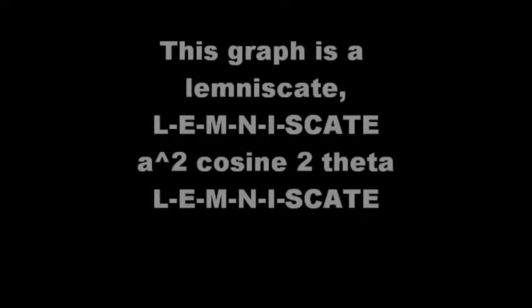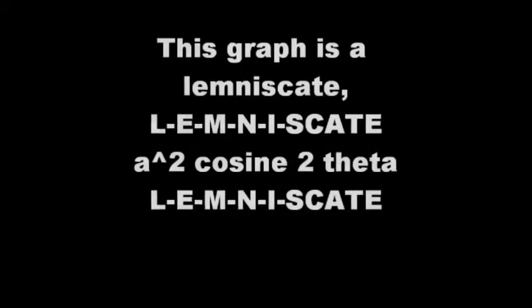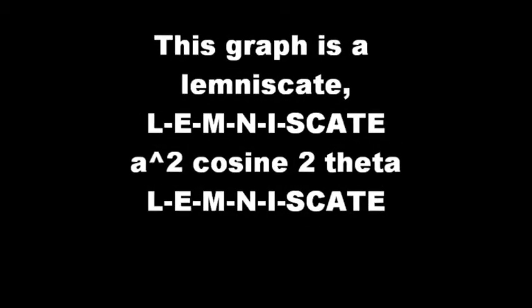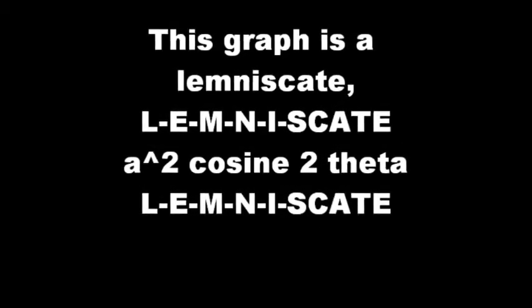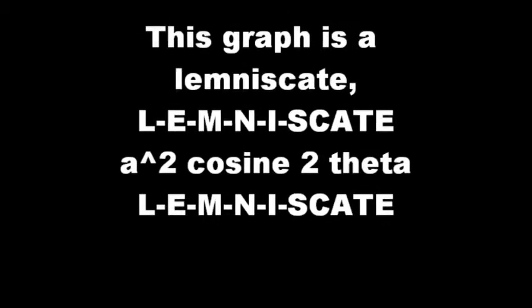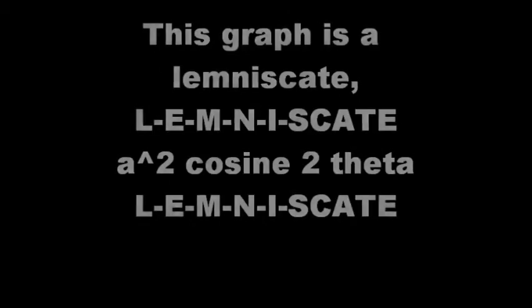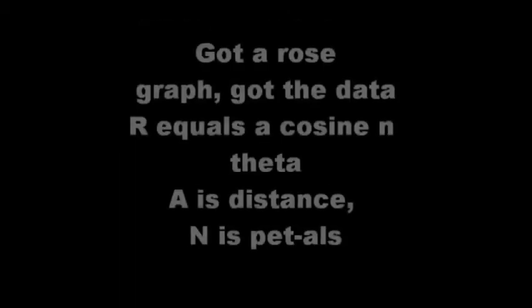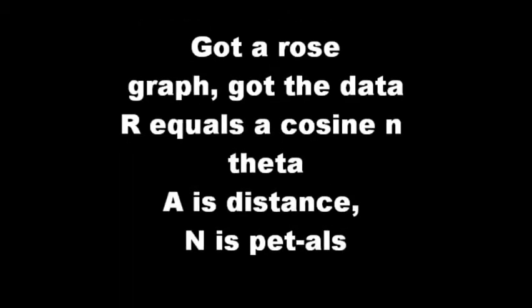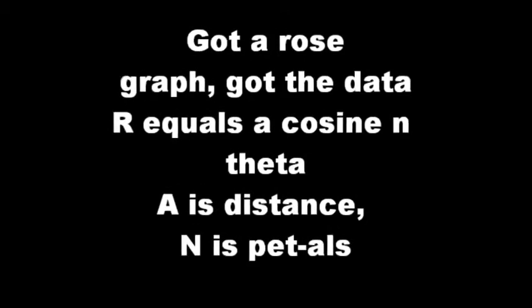Please mother, lemme skate. This graph is a lemniscate — L-E-M-N-I-S-C-A-T-E. A squared cosine two theta — L-E-M-N-I-S-C-A-T-E. Got a rose graph, got the data — r equals a cosine n theta. A is distance, n is petals. Now you got your graphs, girl.